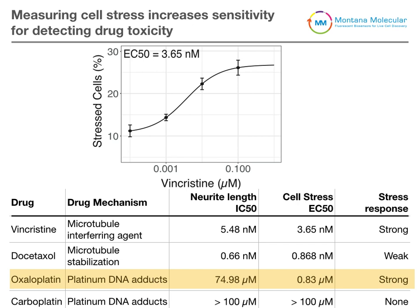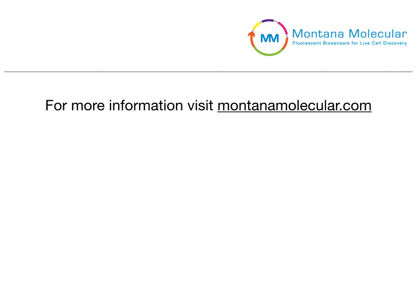This is just one example of how sensors developed at Montana Molecular can be used in iPSC-derived cell types to examine things like cell stress and toxicity. For more information about the cell stress sensor or our other sensors and assays optimized for use in iPSC-derived cell lines, please visit us at montanamolecular.com.